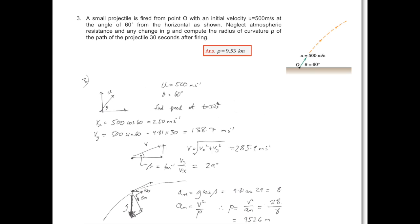Find the radius of curvature of the particle on its trajectory after 30 seconds. Starting off with projectile motion in Cartesian rectangular coordinates, we're going to convert to normal-tangential.